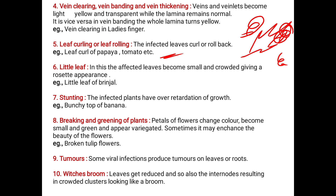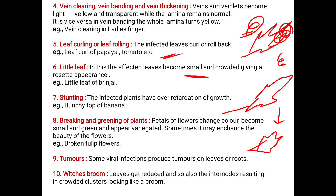Next, little leaf. The affected leaves become small and crowded, giving a rosette appearance. The leaves turn smaller compared to their normal size, which is a symptom of viral attack. The example is little leaf of brinjal, where leaves become small and crowded giving the appearance of a rosette.